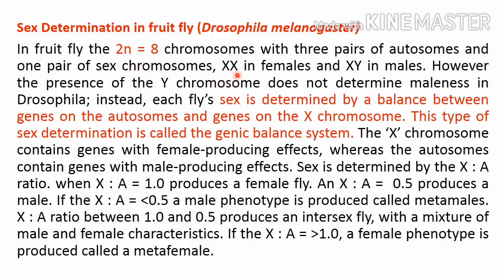Unlike human males, the Y chromosome of Drosophila does not play any role in sex determination. It is the ratio of X chromosomes to the haploid set of autosomes that is responsible for sex segregation in Drosophila. When the ratio of X to A (haploid autosome set) equals 1, it produces a female. When the ratio X/A equals 0.5, it produces a male.